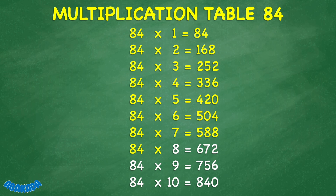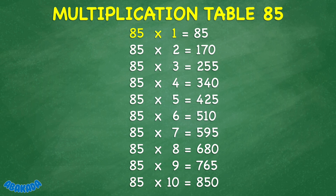84 times 8 equals 672. 84 times 9 equals 756. 84 times 10 equals 840. 85 times 1 equals 85. 85 times 2 equals 170. 85 times 3 equals 255. 85 times 4 equals 340. 85 times 5 equals 425.